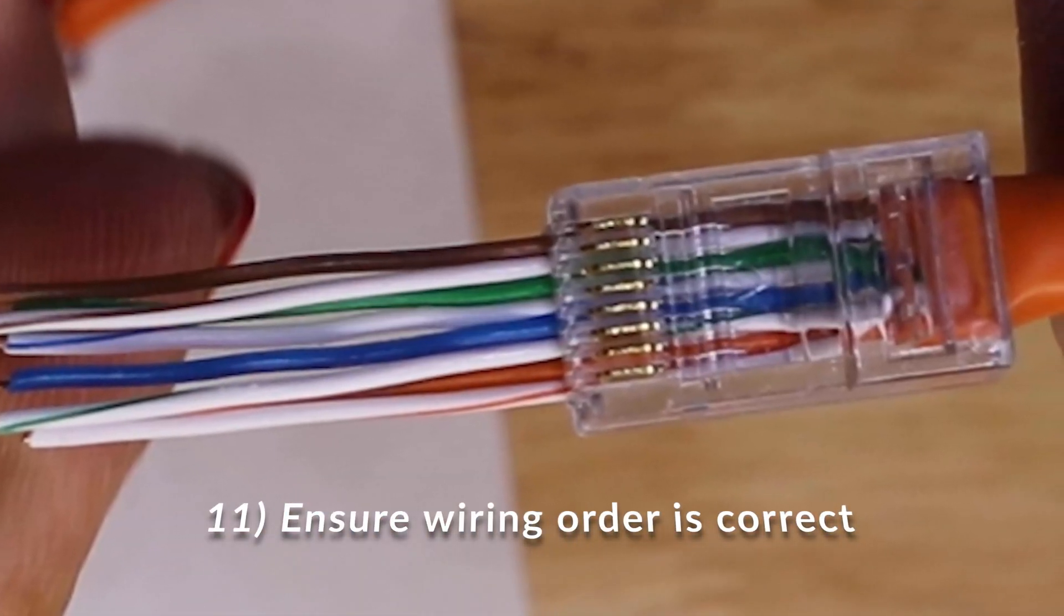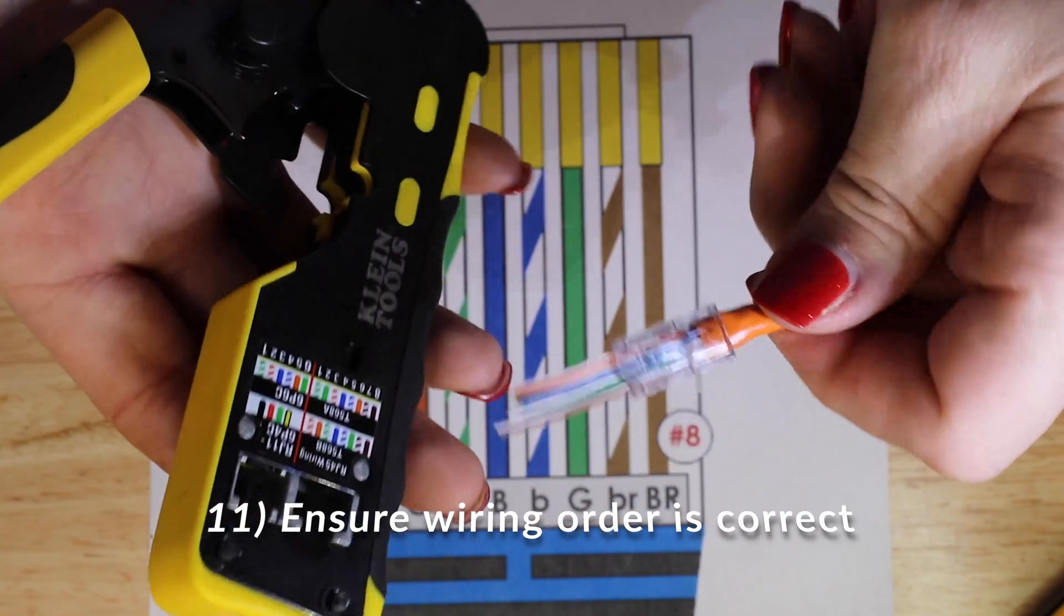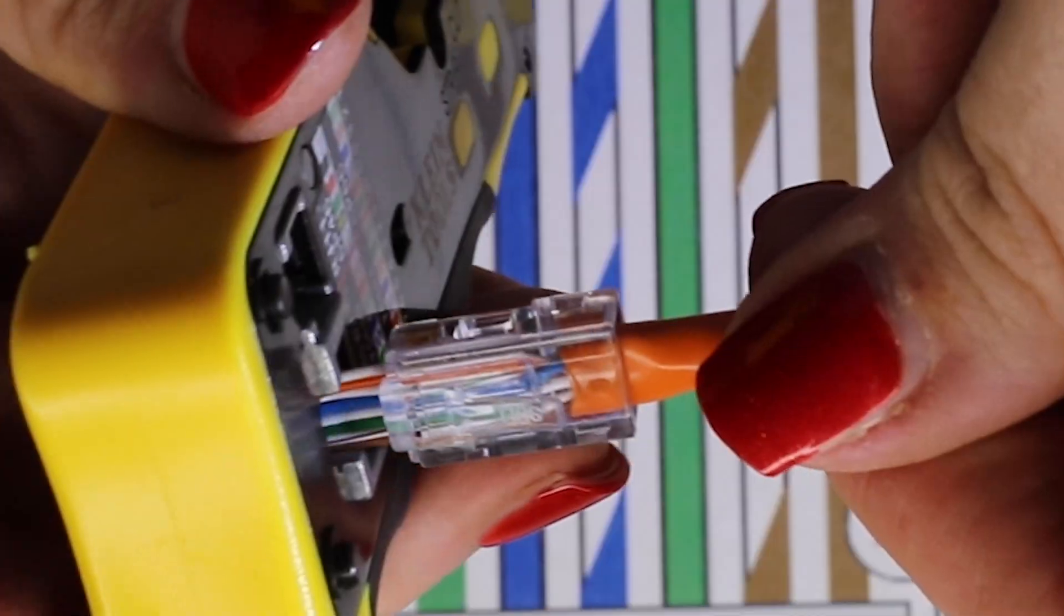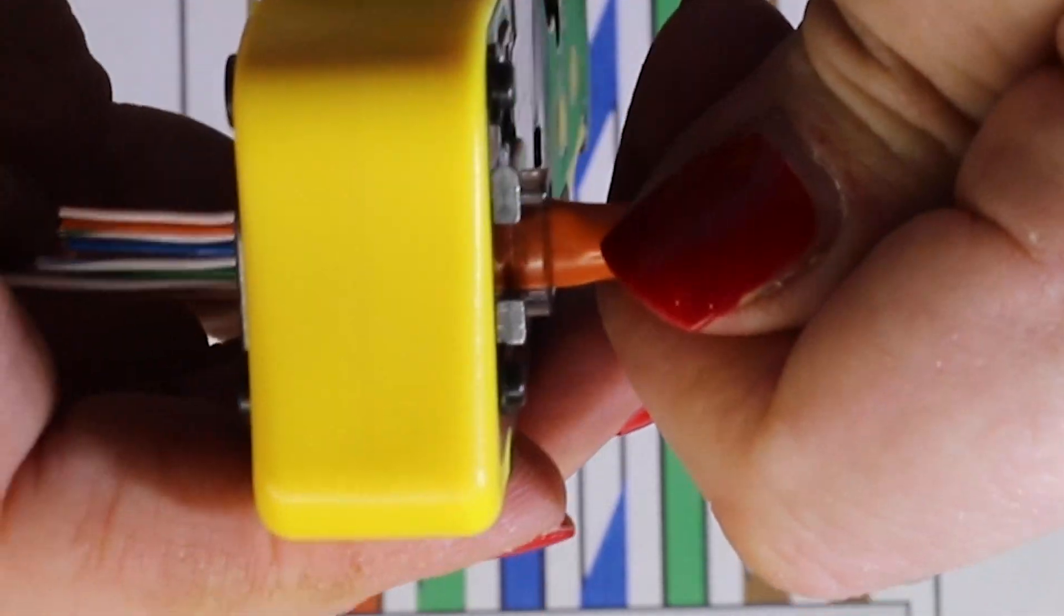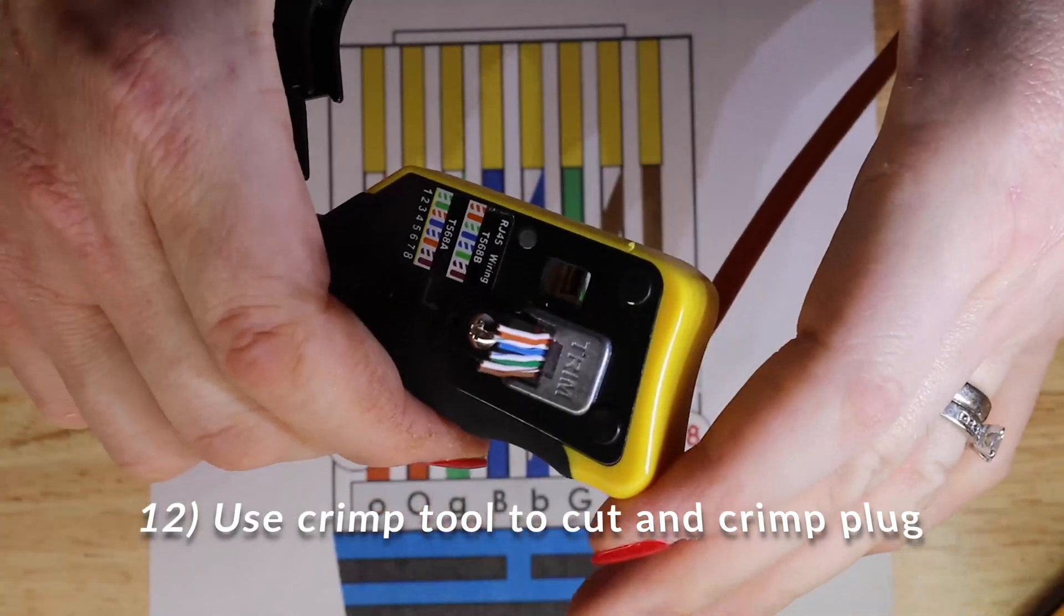This is so that I can put it in the crimp tool and cut the tips of the wires off using the razor edge that's in this Klein crimping tool that I'm using.